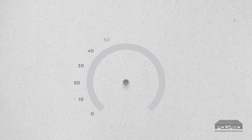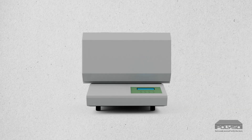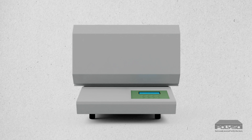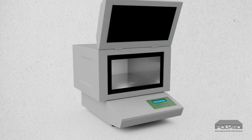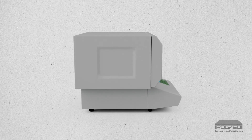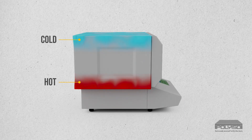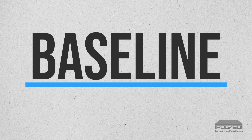Let us look at how the R-value test is conducted and the role mean temperature plays in the testing. Third-party accredited laboratories use an instrument called a heat flow meter to measure heat flow through the product. The heat flow meter is an instrumented box that exposes the insulation sample to a temperature differential on the top and bottom surfaces of the sample — one hot and one cold. The difference between the hot and cold surfaces establishes the mean temperature for the R-value measurement.